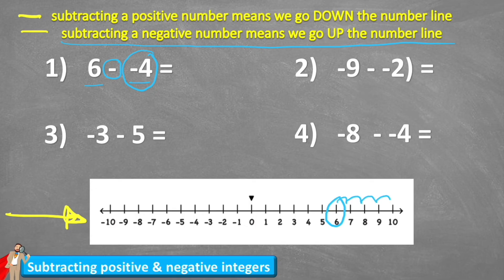One, two, three, four — leaves me with ten. So six subtract a negative four equals ten. Let's have a look at question two.